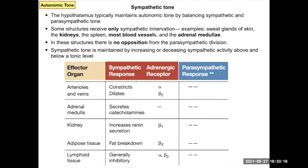A couple other exceptions: your blood vessels are the biggest one — they don't really have a major parasympathetic response. Almost all major blood vessels are not innervated by your parasympathetic nervous system. Your kidneys are generally not either. Adipose tissue for fat breakdown and your immune system are also generally not controlled by the parasympathetic.